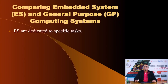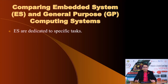The first difference is that embedded systems are dedicated for specific tasks. They may perform one task or a few tasks, but that number is fixed. In contrast, a general purpose computing system allows you to add any applications — embedded systems are fundamentally different from such systems.